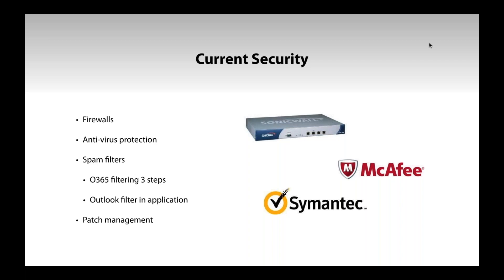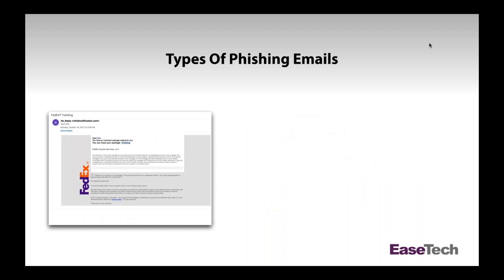But cyber criminals are crafty and they send out phishing emails in different ways. First, they may send an email with an attached malware package — a zip file, PDF, or Word document that seems innocuous. Once opened, they install malware to your computer that you can't even recognize, and your firewalls and antivirus software may not be current enough to block them.